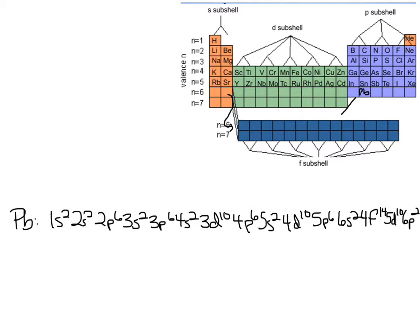Remember that f comes in after 6s, so it's 4f. If I was going through the periodic table, the next row would be 7s, then 5f, then 6d, then back to 7p — but I don't have to go that far. This is a long one, so now I can work out the number of electrons in each shell.